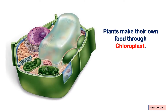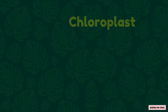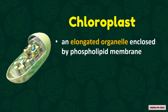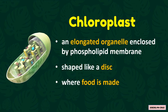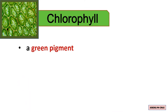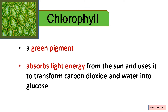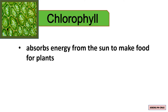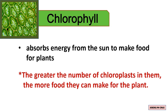Plants make their own food through the chloroplast. Chloroplast is an elongated organelle enclosed by a phospholipid membrane, shaped like a disc. It is where food is made. Each chloroplast contains a green-colored pigment called chlorophyll, required for the process of photosynthesis. Chlorophyll absorbs light energy from the sun and uses it to transform carbon dioxide and water into glucose. Thus, the greater the number of chloroplasts, the more food they can make for the plant.